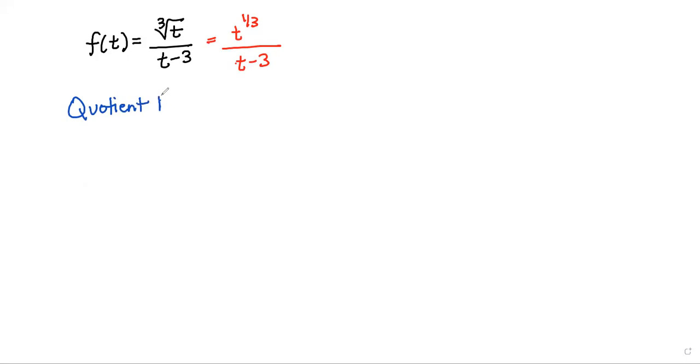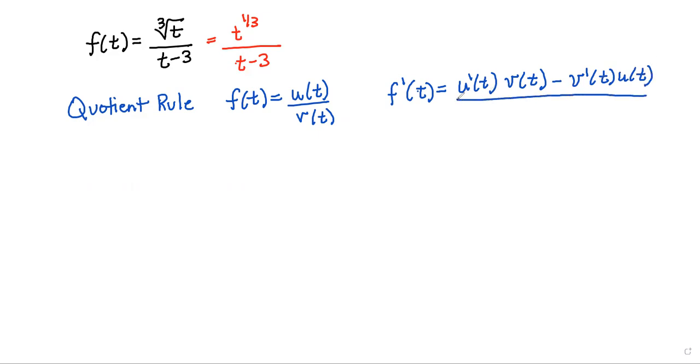Basically it helps us take the derivatives of fractions. So let's say in general I have a function that looks like u of t over v of t. Then if I want to find the derivative, what I'm going to do is take the derivative of the top times the bottom minus the derivative of the bottom times the top all over the bottom squared.